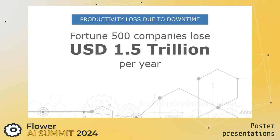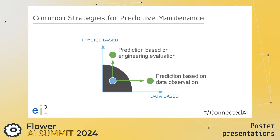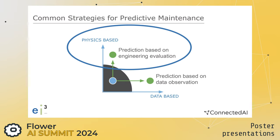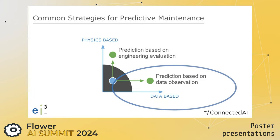According to a recent study, Fortune 500 manufacturers lose a staggering 1.5 trillion US dollars per year due to unplanned downtime, making predictive maintenance a key element in overall maintenance strategy. Predictive maintenance can be categorized into two kinds of models: the physical-based model, where based on physical understanding you derive a mathematical description, and data-driven models, where based on empirical incidents you try to predict future events.